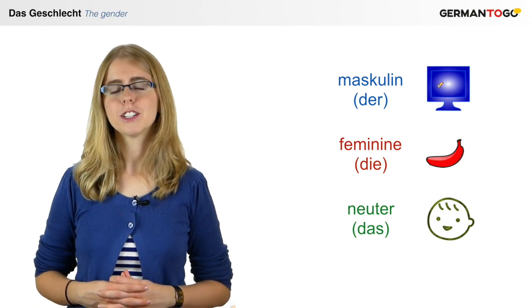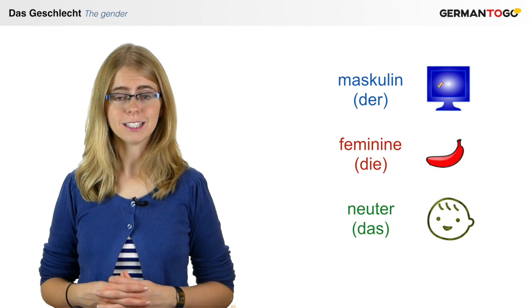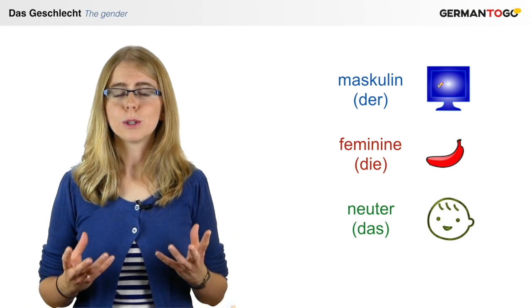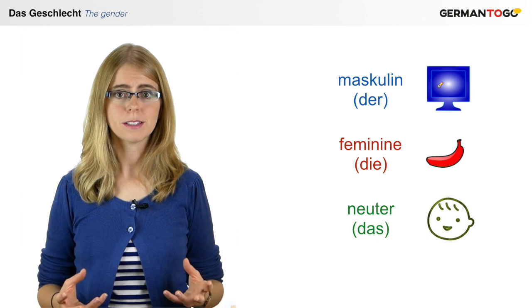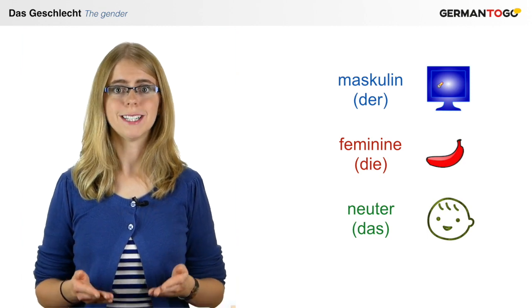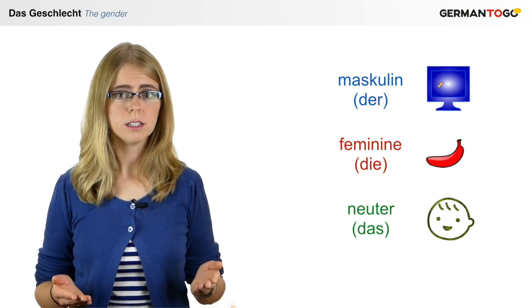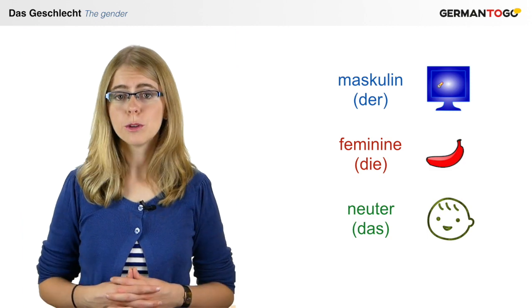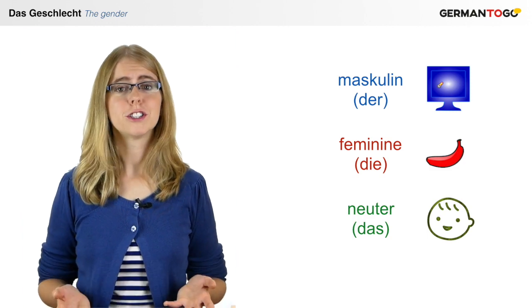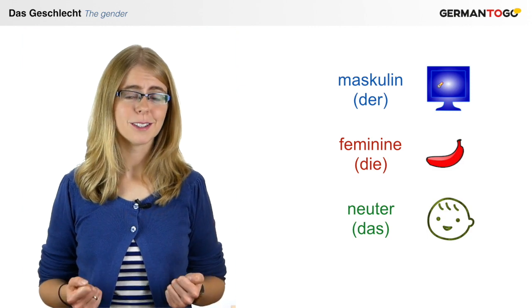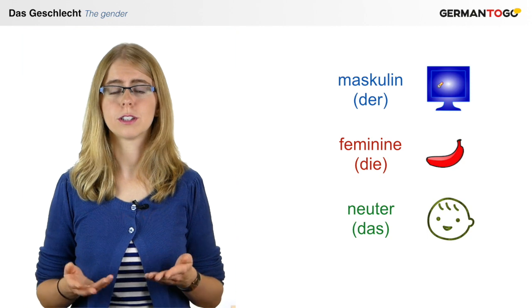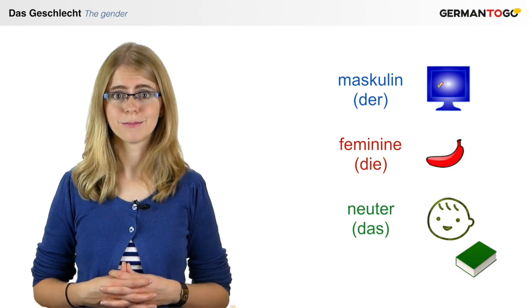And then, you can also work with associations. Take one male person to associate with masculine things — for example, your father. When you want to learn the word der Computer, imagine your father holding a computer, maybe even a blue computer. Imagine your mother holding a banana. Or imagine a baby playing with something that is neuter — for example, a book.